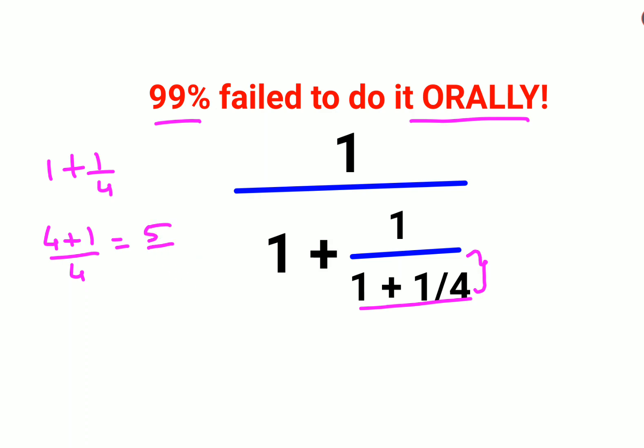That can be written as 5 upon 4. So basically you are getting 1 upon 1 plus 1 upon 5 upon 4.